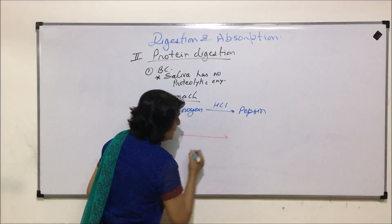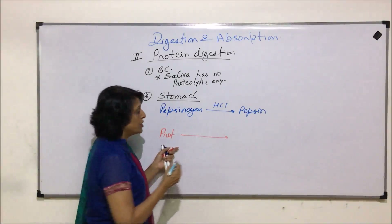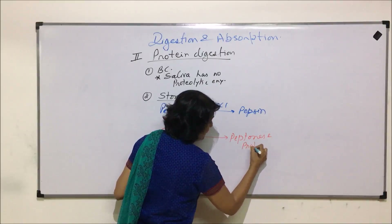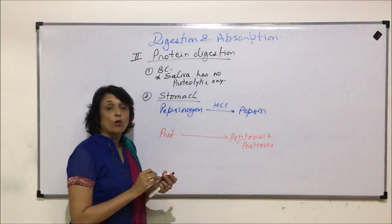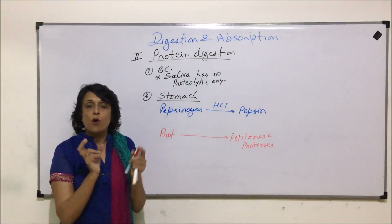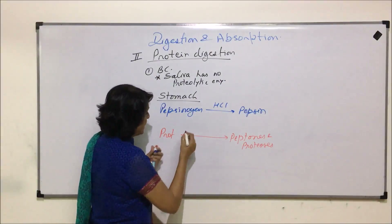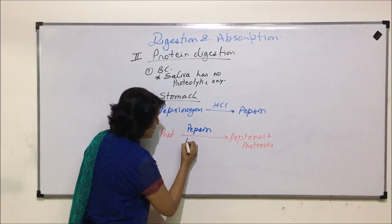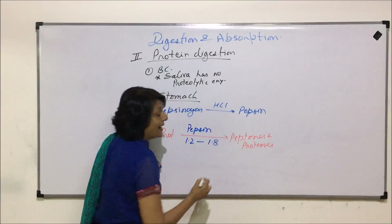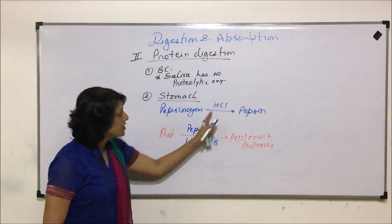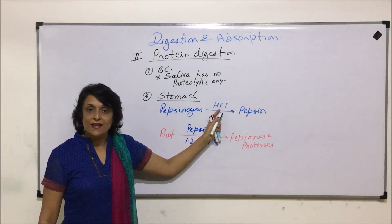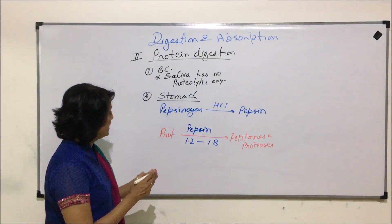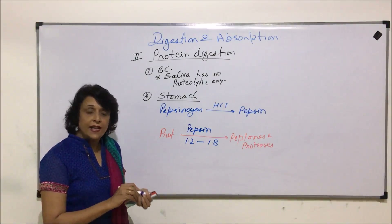The active pepsin acts on proteins. These larger protein molecules are broken down into peptones and proteoses, which are smaller polypeptide molecules. The enzyme acting here is pepsin, and the pH at which this enzyme works is 1.2 to 1.8 — a highly acidic pH, also provided by hydrochloric acid.